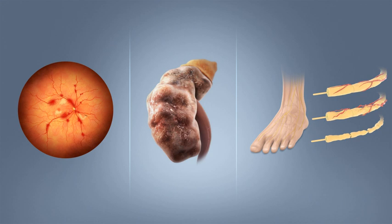Gestational diabetes is the third main form, and occurs when pregnant women without a previous history of diabetes develop high blood sugar levels. Prevention and treatment involve maintaining a healthy diet, regular physical exercise, a normal body weight, and avoiding use of tobacco. Control of blood pressure and maintaining proper foot care are important for people with the disease.